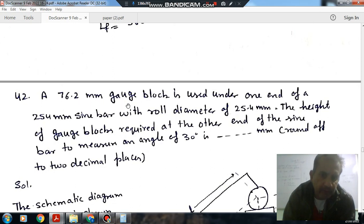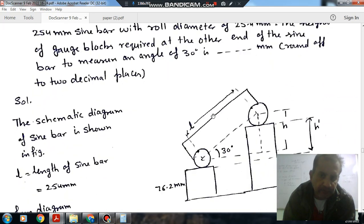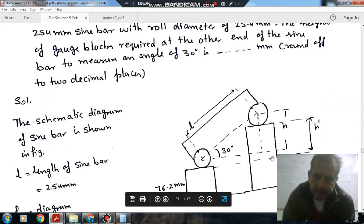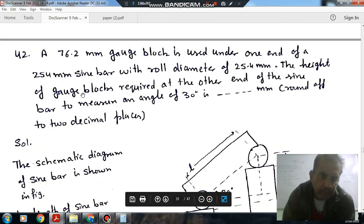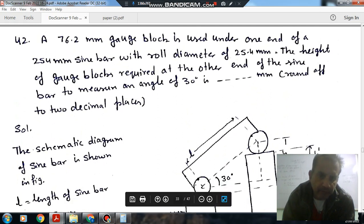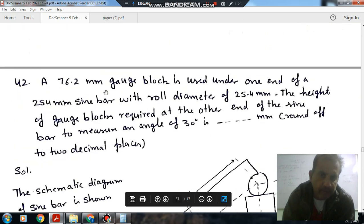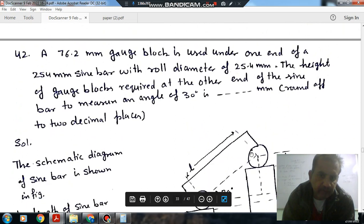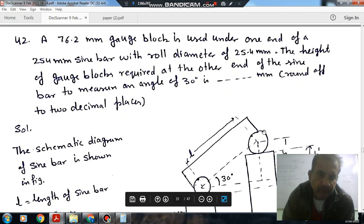Next: A 76.2mm gauge block is used under one end of a 254mm sine bar with a roll diameter of 25.4mm. The height of the gauge block required at the other end of the sine bar to measure the angle of 30 degrees is blank mm. So this is your sine bar schematic diagram. The sine bar length is 254mm, gauge block is 76.2mm on one side, and the roll diameter is 25.4mm.